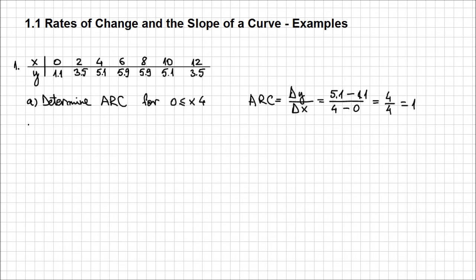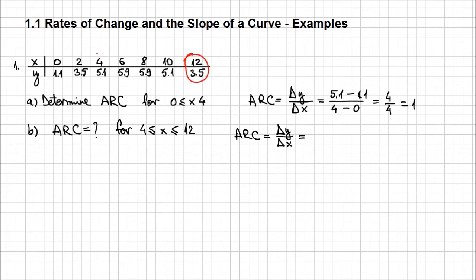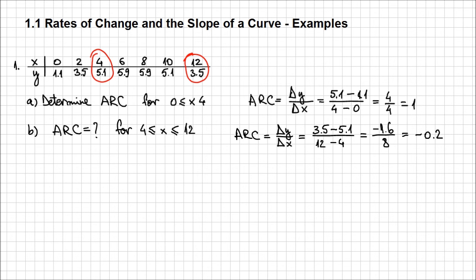Let's try another one. This time I want to calculate the average rate of change for the interval [4, 12]. The average rate of change is delta y over delta x — the slope of the secant through these two end points. From the table, the y-coordinate corresponding to x = 12 is 3.5, minus the y-coordinate when x = 4, which is 5.1, over 12 minus 4. Performing the operation, I end up with minus 1.6 over 8, or minus 0.2. So this time we have a negative value.